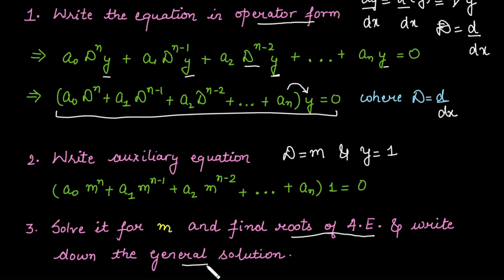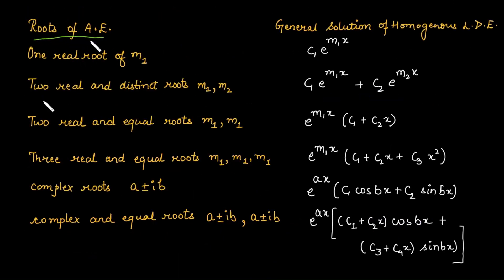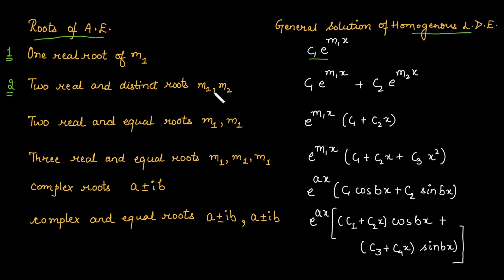The third step is to write the general solution based on the roots. If there is a single real root m1, the solution is c1·e^(m1·x). If there are two distinct real roots m1 and m2, the solution is c1·e^(m1·x) + c2·e^(m2·x).